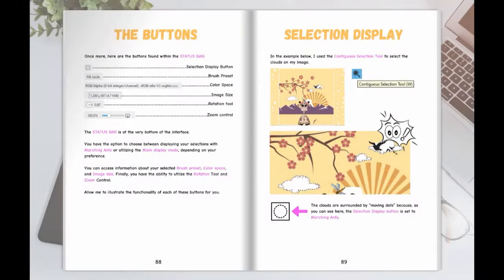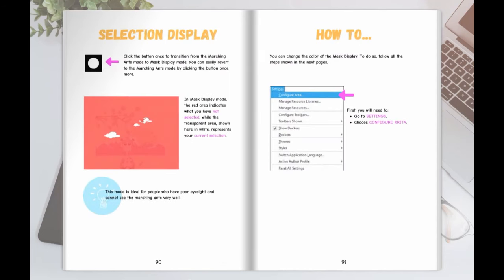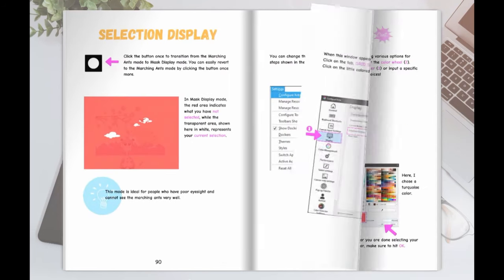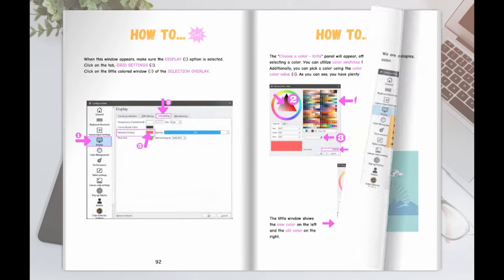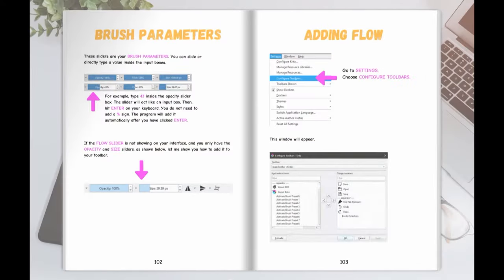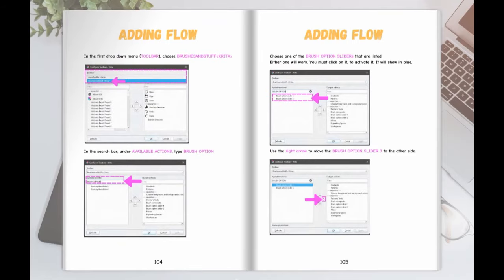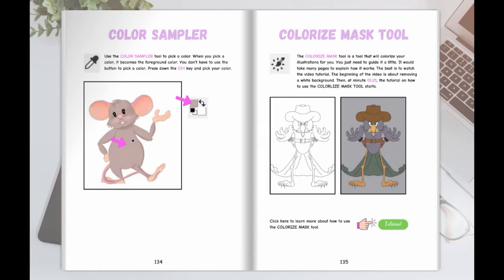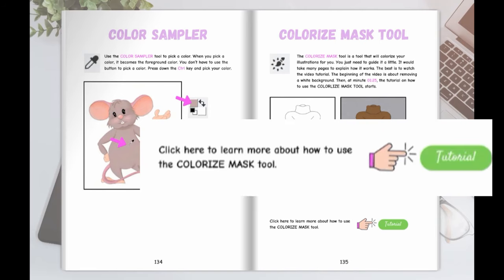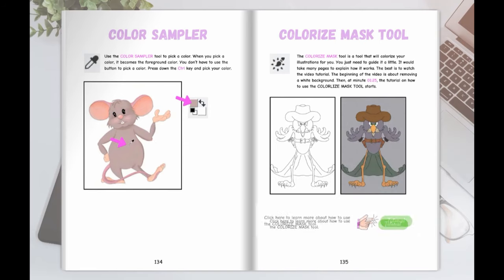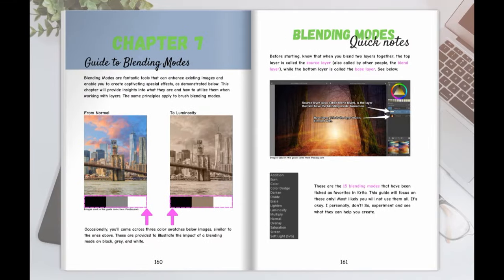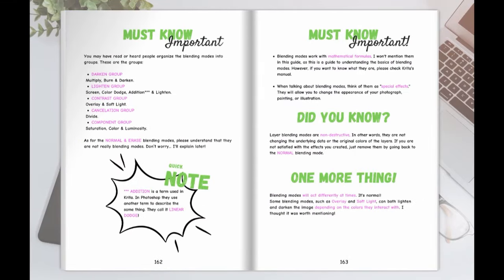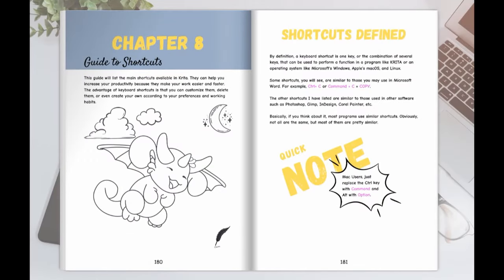Each chapter will provide step-by-step instruction on various topics such as changing your selection display color when using the selection display button, or adding the flow button slider alongside the opacity and size button sliders. When I introduce you to different tools, as often as I can, I provide clickable links to video tutorials that demonstrate their full potential. I have also revisited and made a few updates to my older guides on blending modes and shortcuts, which many of you found to be highly helpful.